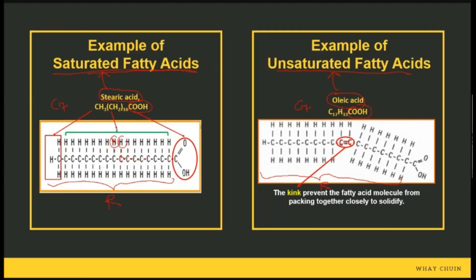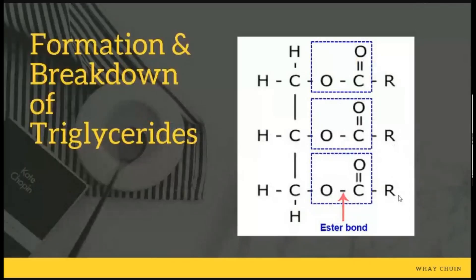Bila double bond muncul sekali, kita notice that this molecule shows a bending point — bending point dalam kimia kita panggil 'kink.' This is why the double bond prevents the fatty acid from becoming solidified. This concept explains why unsaturated fats remain as liquids (oils) at room temperature.